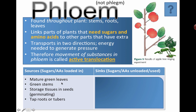Sources include green leaves, green stems, storage tissues, and seeds for germinating. When you drop a seed into the soil, it's not doing photosynthesis yet because it hasn't grown a stem and leaves — so where does it get energy to start growing? A lot of that energy was deposited by the parent plant, stored in the first two leaves called the cotyledons. Tap roots or tubers are also a source.